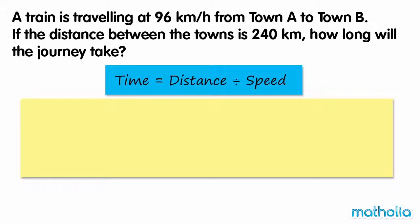Recall that time equals distance divided by speed. The distance is 240 kilometres and the speed is 96 kilometres per hour. Before we divide, check that the units of distance are the same in both expressions. In this case, the units of distance are kilometres in both expressions, so we can divide.